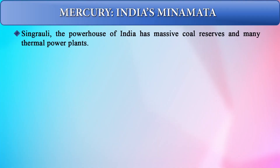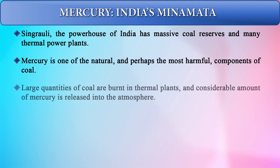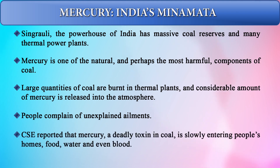Regarding mercury, we have understood about Minamata disease which occurred in Japan. India's equivalent is in Singhrauli — the powerhouse of India with massive coal reserves and many thermal power plants. Mercury is one of the most harmful components of coal, and when large quantities of coal are burnt in thermal power plants, considerable amounts of mercury are released into the atmosphere. The Centre for Science and Environment studied Singhrauli and found that people complained of unexplained ailments, with mercury slowly entering people's homes, food, water, and even their blood.